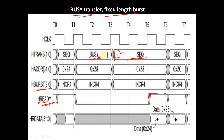Here we can see the transfer type is getting changed even though HREADY is 0, because it is a fixed-length burst. It is changing from BUSY to SEQUENTIAL and it remains constant throughout when HREADY is equal to 0. When HREADY is equal to 1, the transfer type may change from SEQUENTIAL to any other transfer type. So this is the case of BUSY transfer with a fixed-length burst.